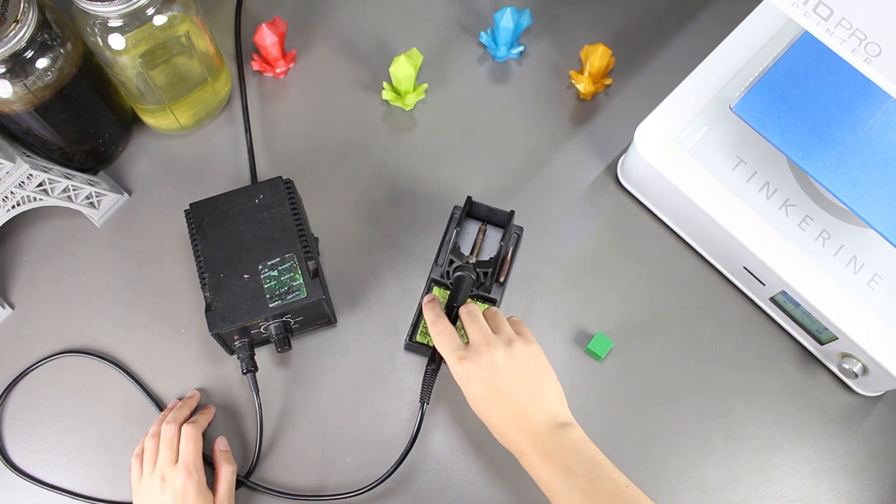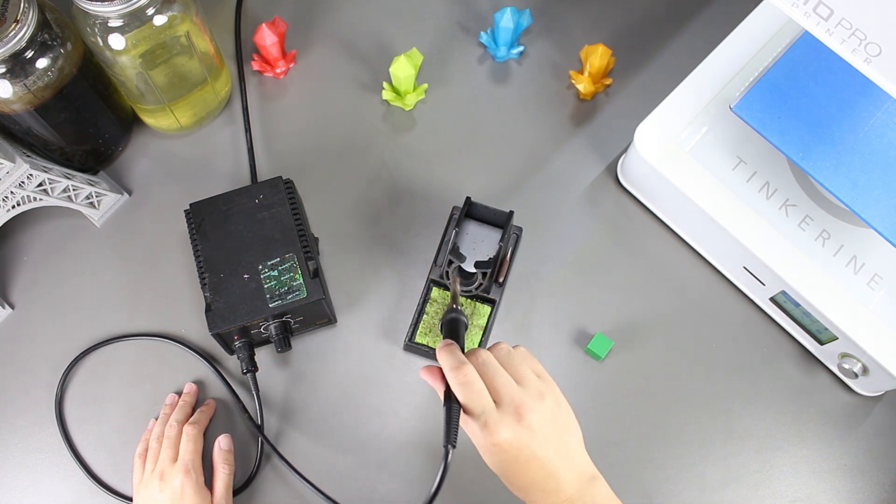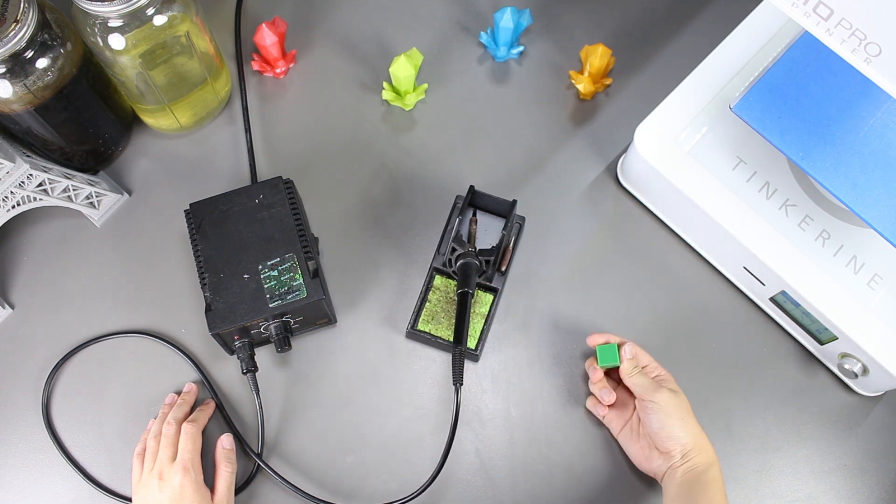Welcome to another episode of Tinkering Experiments. In this episode, we'll be trying to smooth out our PLA print with a soldering iron.